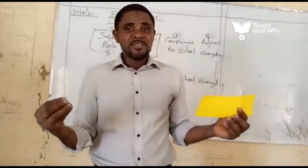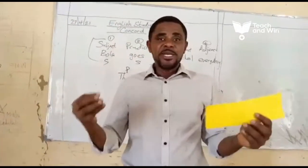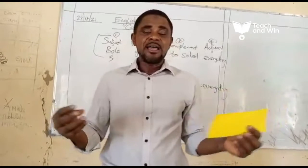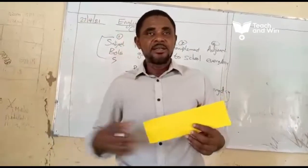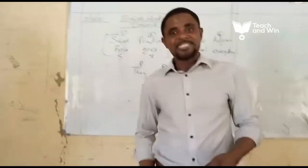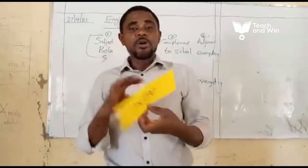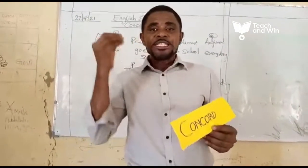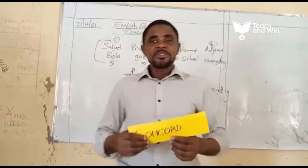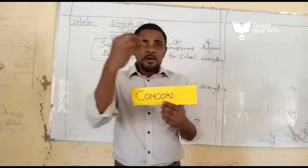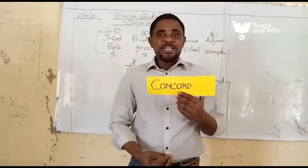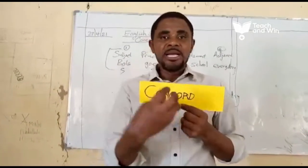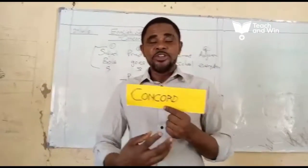In forming correct sentences, there are four patterns of writing correct sentences. These are subject, the predicator, complement, and the adjunct. So, for the purpose of this Concord topic today, we are only going to make use of subject and the predicator. The patterns of speech that fall under subject are noun, noun clause, pronoun, adjective, and adjectival clause or phrase.